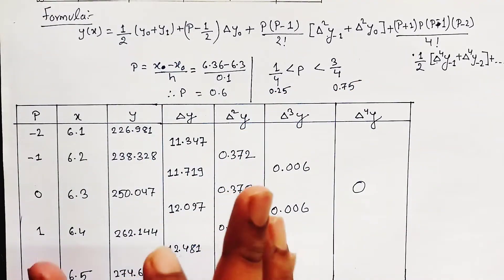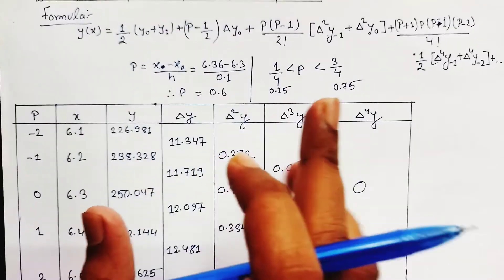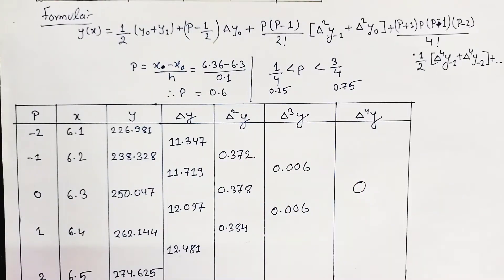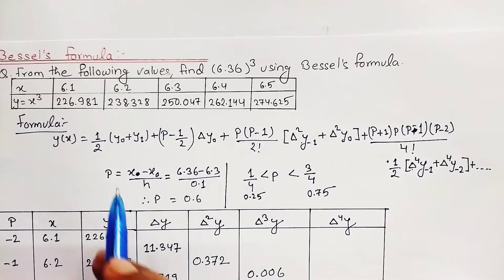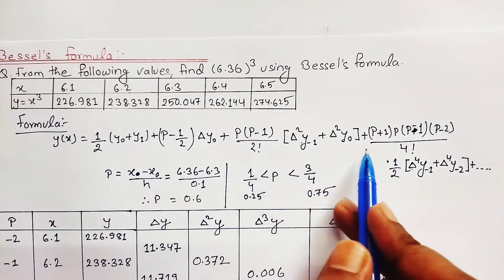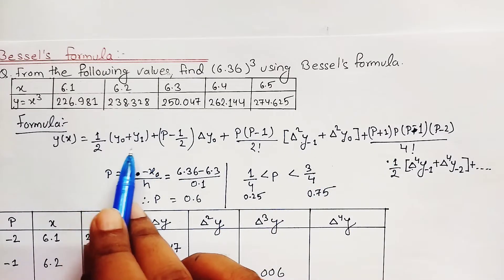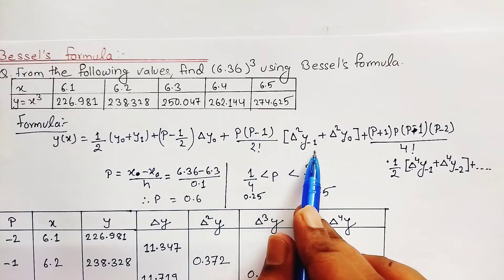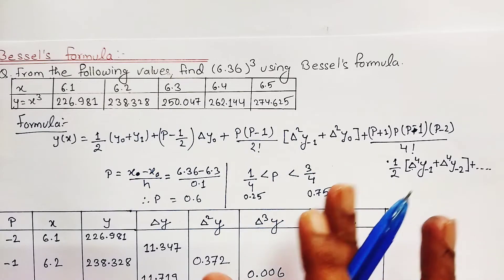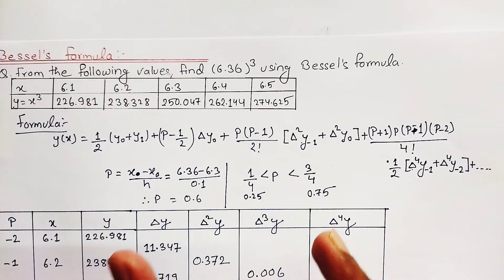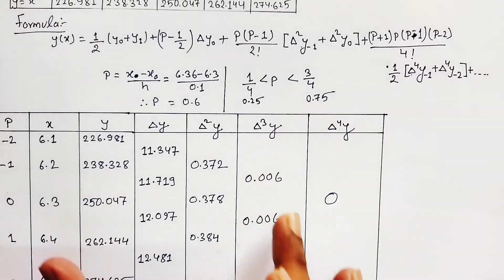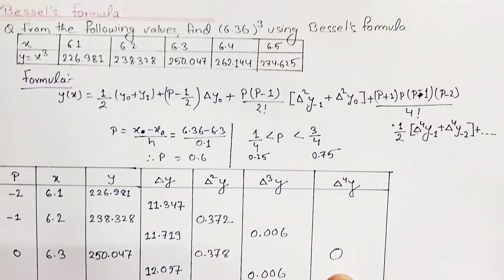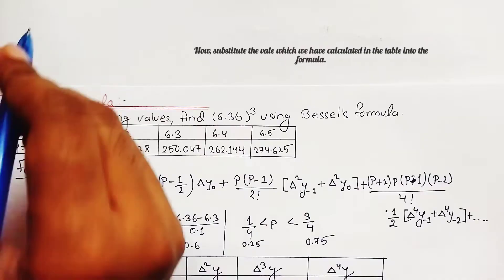Now we substitute these computed values into the Bessel's formula to find the value of 6.36 cubed. We have already calculated Δy₀, Δ²y₋₁, and the other required differences.